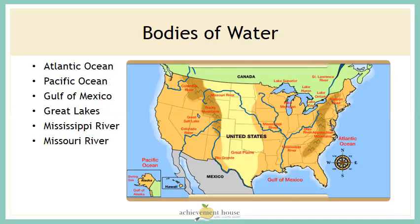This map highlights the major bodies of water in the United States. Take a moment to locate them: the Atlantic Ocean is on the east coast, the Pacific Ocean on the west coast, the Gulf of Mexico to the south, the Great Lakes to the north, the Mississippi River, and the Missouri River.